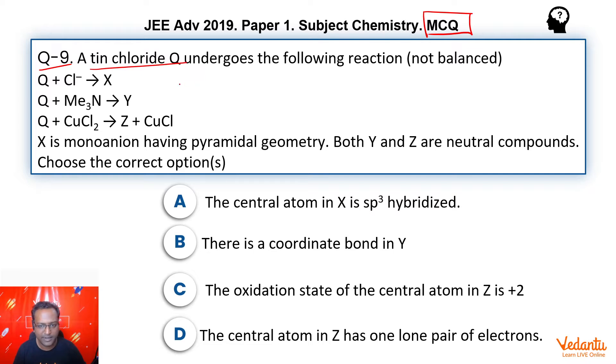There's a tin chloride which undergoes the following reactions: tin chloride plus Cl⁻ gives X, with Me₃N gives Y, with CuCl₂ gives Z plus CuCl. X is a mono-anion having pyramidal geometry, and Y and Z are neutral compounds. We are given a lot of options.